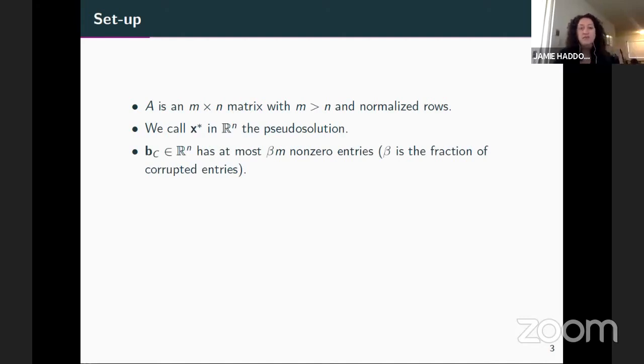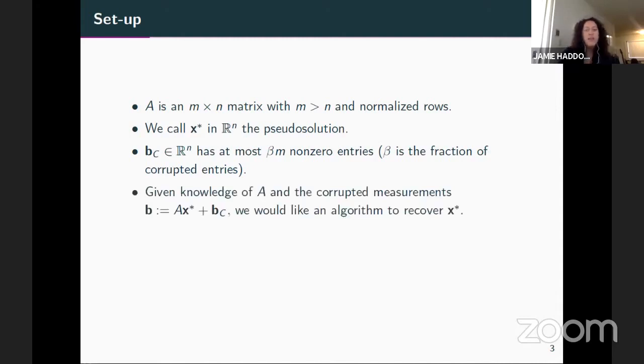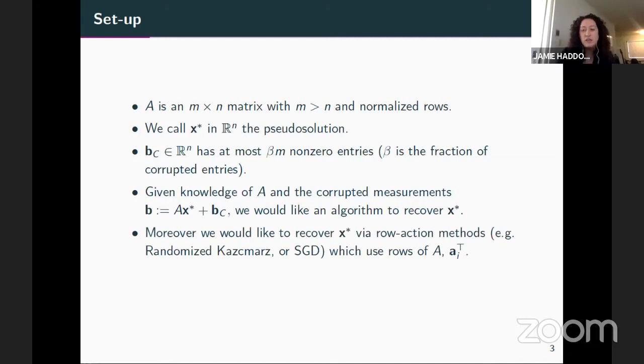So here we're imagining that we have some kind of collection of corruptions held in this sparse vector B sub C. It's going to have at most beta times M non-zero entries. So that means beta is going to be the fraction of the corrupted entries. And our problem really then is that given knowledge of the matrix A and the corrupted measurements, we'd like to design an algorithm which will recover the pseudo solution and do so efficiently. And specifically, we're interested in using variants of row action methods like randomized Kaczmarz or SGD, which are going to use individual rows of the matrix A. We denote these A sub I transpose. And one question which we'll at least give some partial answers to is, for which matrices can we obtain such a guarantee?